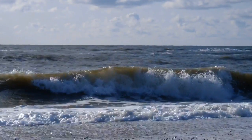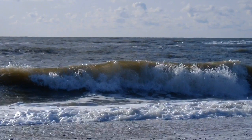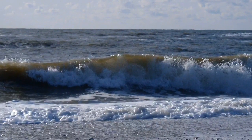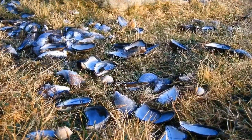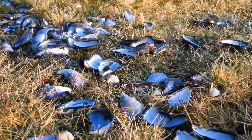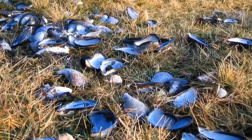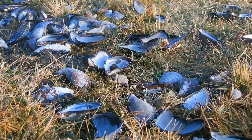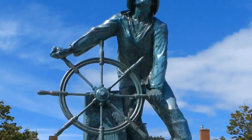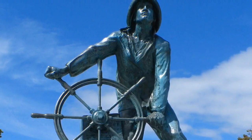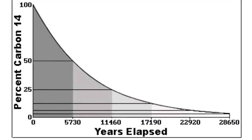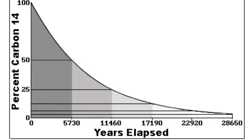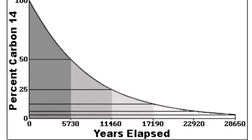Different environments absorb radiocarbon at different rates. The sea is a prime example. This different rate of absorption affects the radiocarbon ratio in sea life, and in turn any creatures who eat the sea life — for example, those living in a fishing community. Such things should be taken into consideration. However, these variations can be compensated for, and radiocarbon dating is one of the most useful and widely used dating methods in the world.